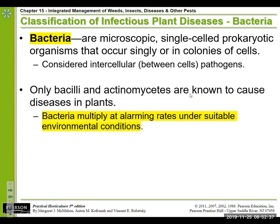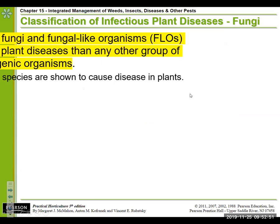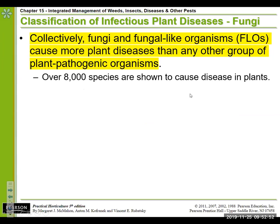One of the issues with bacteria is that they multiply at alarming rates as long as they have suitable environmental conditions — and we generally think of that as being warm and moist. Unfortunately, that's also kind of the environment that our plants prefer for optimal growth.